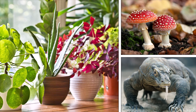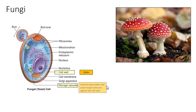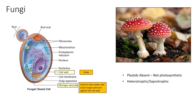Focusing on fungal cells specifically: they have a variety of structures similar to all other eukaryotic cells, but key differences include a chitinous cell wall and numerous small storage vacuoles that can store water and cause turgor pressure against the cell wall. The storage vacuole in a fungal cell is substantially smaller than the large central vacuole in a plant cell. Plastids are absent in fungi.